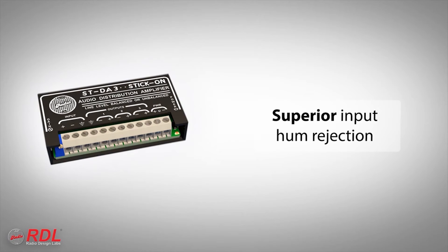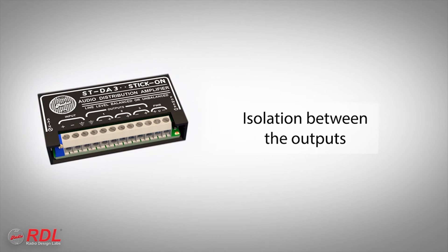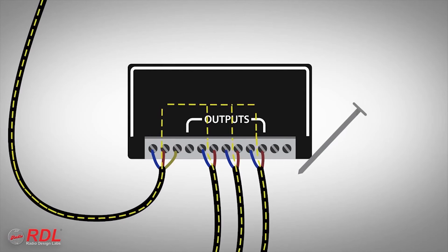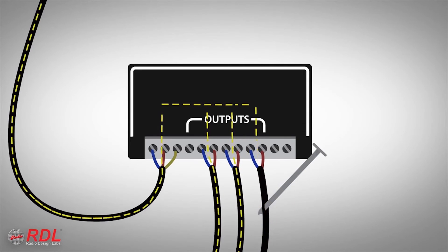Superior input hum rejection. Isolation between the outputs. That means if a line-level audio signal is accidentally connected into one of the module outputs, that signal does not pass through to the other outputs. If one output is accidentally shorted, the other outputs continue working.